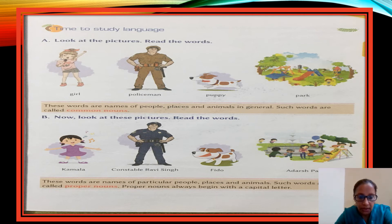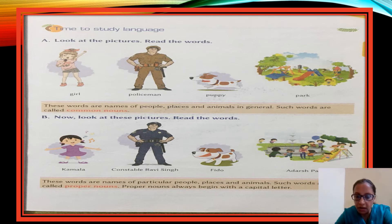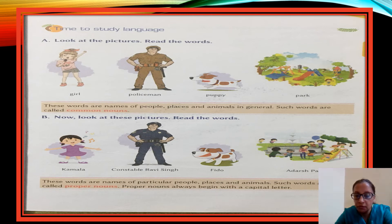Part B: now look at these pictures and read the words — Kamala, Constable Rabhi Singh, Fido, Adarsh Park. A particular name has been given to each one. The girl has a name, the policeman has a name, the dog has been named Fido, and we know which park — Adarsh Park. So all these come under proper nouns.